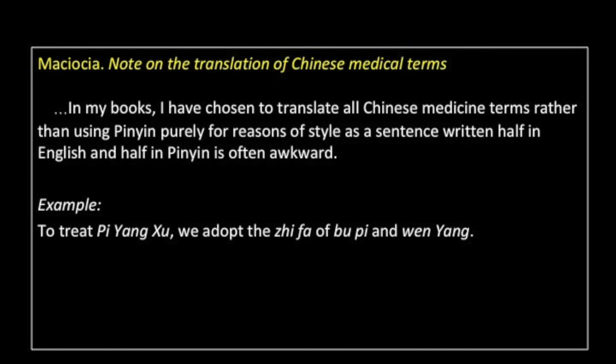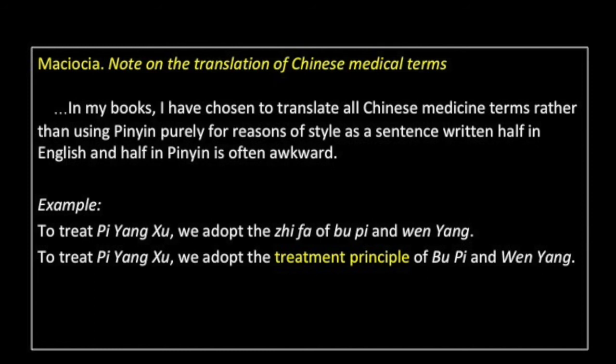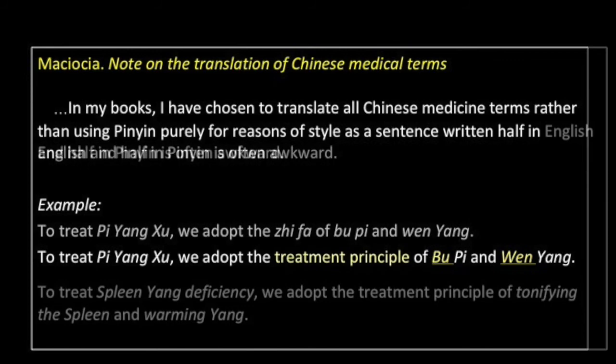Macioccia gives the example: 'To treat Pi Yang Xu, we adopt the Zhi Fa of Bu Pi and Wen Yang.' I don't think there will be any misunderstanding if we use the term 'treatment principle' for Zhi Fa. Although the sentence looks challenging in isolation, the remaining Chinese terms — Bu meaning to tonify, and Wen meaning to warm — are actually very commonly used, especially in the names of formulas, which discussion groups commonly prefer to reference by their Chinese names.